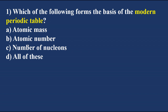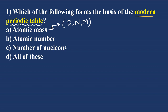Which of the following forms the basis of the modern periodic table? The options are atomic mass, atomic number, number of nucleons. Earlier scientists Dobereiner, Newlands, and Mendeleev made periodic tables based on atomic mass. But the modern periodic table is based on atomic number - that is option B.